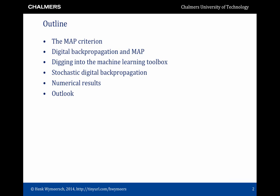This is the outline of the presentation. I will start by briefly reviewing the MAP criterion, and then describing how digital backpropagation is not MAP. We will then dig into the machine learning toolbox and look at the appropriate tools to connect digital backpropagation with MAP. The resulting algorithm is called Stochastic Digital Backpropagation. We'll provide some numerical results and finally an outlook.